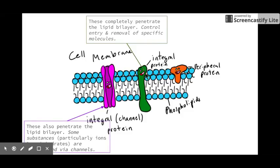Next are channel proteins, which are similar to integral proteins. These also penetrate the lipid bilayer and some substances, particularly ions and carbohydrates, are transported via these channels. Remember carbohydrates can be too big to pass through and ions need to travel against a concentration gradient. Most substances travel from an area of high concentration to low concentration. This channel allows ions to move freely if concentrations are different on either side of the membrane.